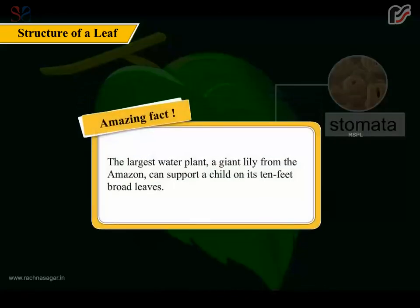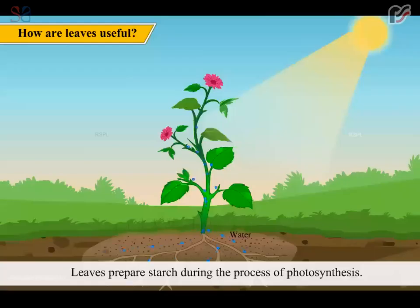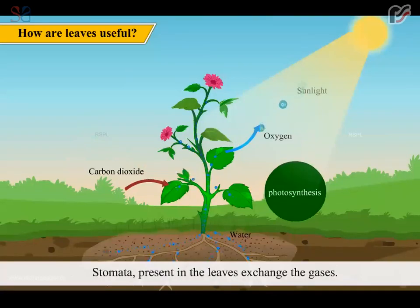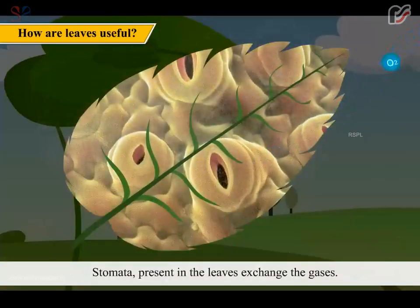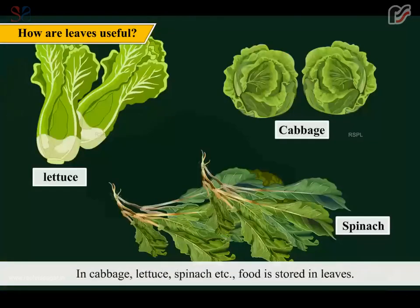Tiny pores present on the leaf surface are called stomata. Amazing fact: the largest water plant, a giant lily from the Amazon, can support a child on its 10 feet broad leaves. Leaves prepare starch during the process of photosynthesis. Stomata present in the leaves exchange the gases. In cabbage, lettuce, spinach etc., food is stored in leaves.